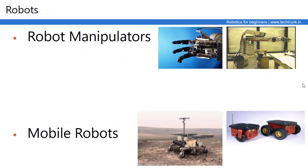There are various types of Robots: Robotic Manipulators, Mobile Robots, Stationary Robots, Industrial Robots, Domestic Robots, and Educational Robots. Every robot or machine is designed to perform specific tasks and actions. For example, Robotic Manipulators or End Effectors can be used to handle objects, lift objects, and pick and place objects.